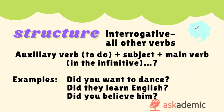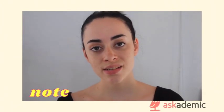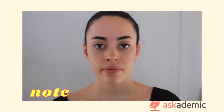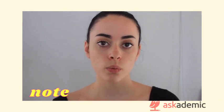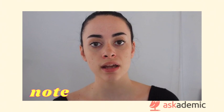The structure for an interrogative past simple sentence with all other verbs would be: auxiliary verb to do, plus the subject, plus the main verb in the infinitive, the rest of the sentence, and the question mark. For example: did you want to dance? Did they learn English? Did you believe him? As in negative sentences, the auxiliary verb will stay in the past while the main verb will remain in the infinitive.